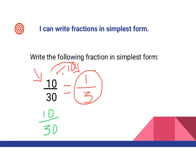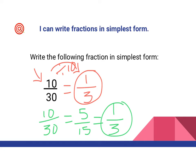Starting by dividing both by two: 10 divided by two is 5, 30 divided by two is 15. Then I look at 5 and 15 — what can I divide both by? It would be 5. So 5 divided by 5 is 1, and 15 divided by 5 is 3. That's another approach to finding a fraction in simplest form: divide multiple times, as long as with each step I divide the numerator and denominator by the same number. That's the only thing I need to be careful about.